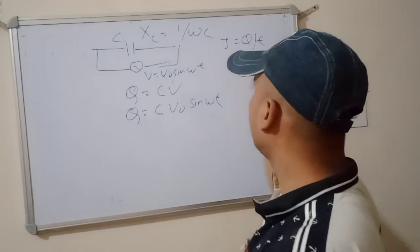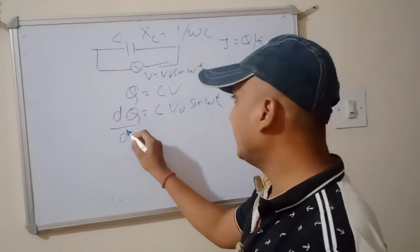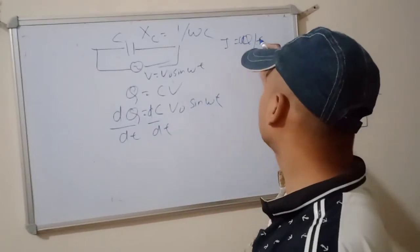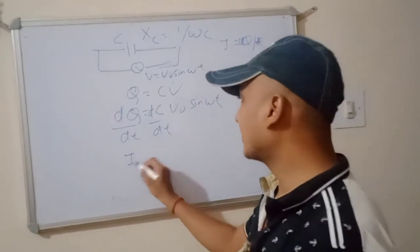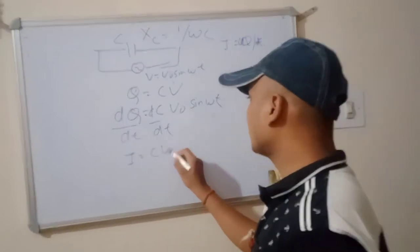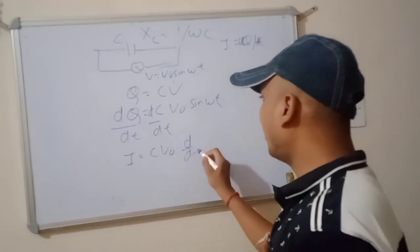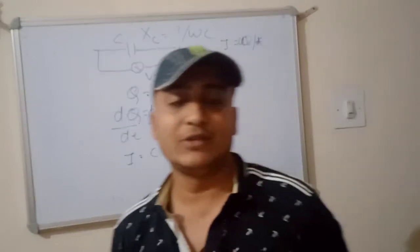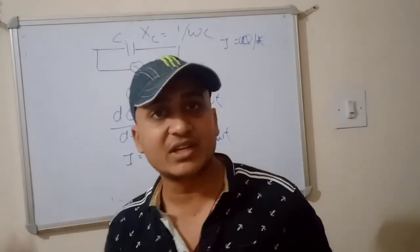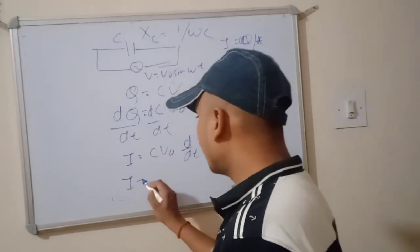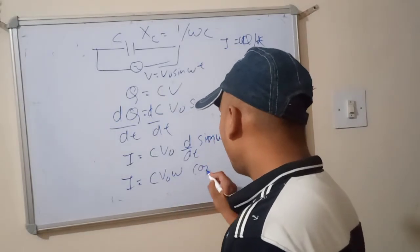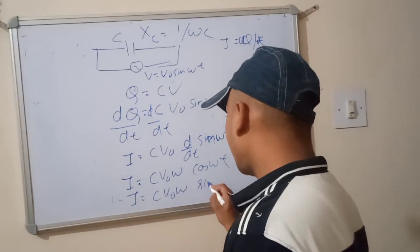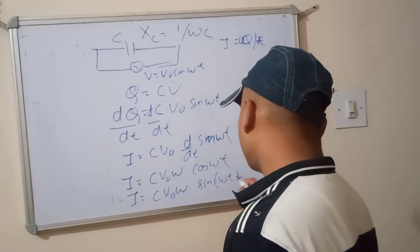We know that current I equals dQ/dt, so taking d/dt on both sides, dQ/dt becomes I. So we can write I equals C times V-naught times d/dt of sine omega-t. The differentiation of sine omega-t is omega cos omega-t, so I equals C V-naught omega cos omega-t, or equivalently I equals C V-naught omega sine(omega-t plus pi/2).